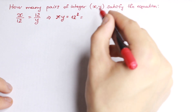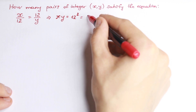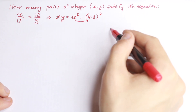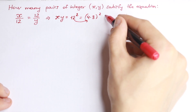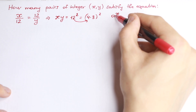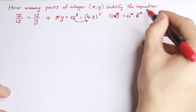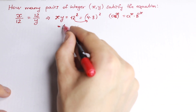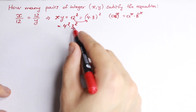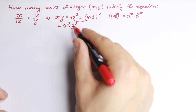Now I want to rewrite 12 squared in another way. We know that 12 squared can be written as (4 times 3) squared. Using the rule that (a times b) raised to the power x equals a^x times b^x, we can write it as 4 squared times 3 squared. And if you multiply it, 16 times 9 equals 144, which is 12 squared. So x times y can be written as 4 squared times 3 squared.